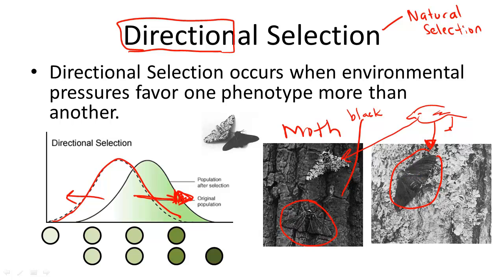So directional selection, or a shift towards an extreme phenotype in a population, can be seen in many populations and it can take place in either direction.